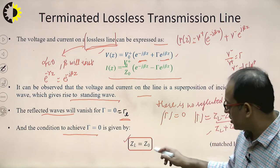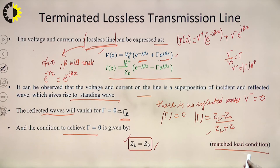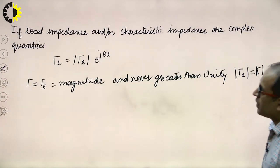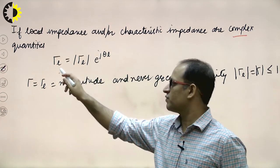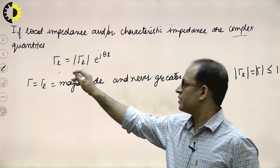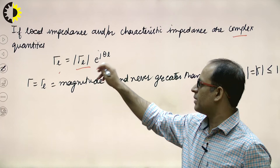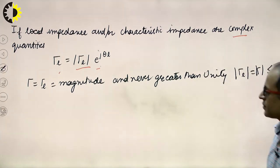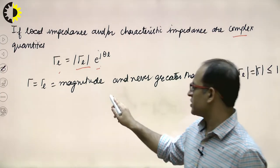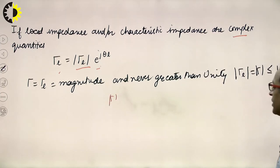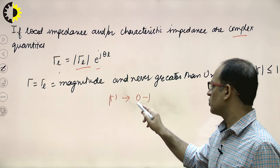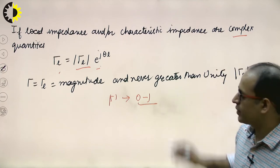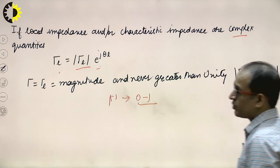The condition ZL = Z0 is known as the matched load condition, or perfect matching. If the load impedance and characteristic impedance are complex quantities, then the reflection coefficient is written with a magnitude and phase as |Γ| e^(jθL). The reflection coefficient can never be greater than one; it ranges from zero to one. Maximum reflection is 100% and minimum is 0%.